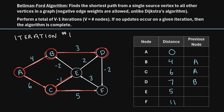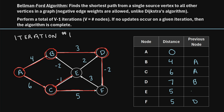Now moving on to node D. If we go from D to F, that's a distance of negative two. D currently has a distance of seven. Seven minus two is five. Five is smaller than the current distance of eleven for node F, so we update F to five, with previous node D. We also fill in the previous node for node E — the shortest distance that led us to E was node C.